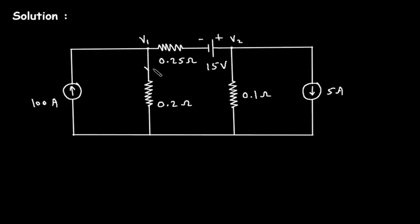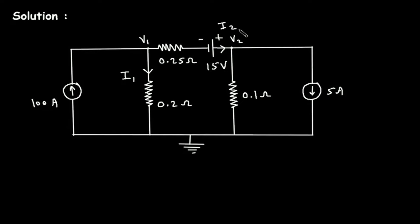Let's assume this is a ground node or reference node. Let's say this is current I1, this is current I2, and this is current I3.